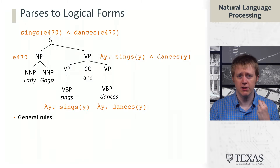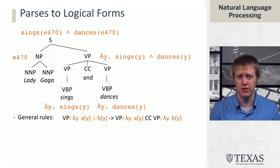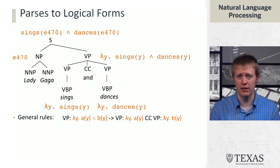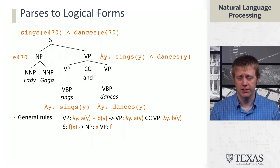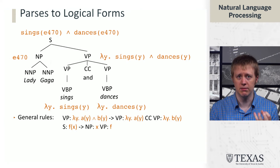This shows that there are general rules we can use here — it's not all just specific mappings of verbs to predicates. For example, we have the constituency rule VP → VP CC VP: coordinating two verb phrases. In orange we see the lambda calculus representation — we're taking lambda y. a(y) and lambda y. b(y) and ramming those together. Similarly, when we form a sentence from a noun phrase and a verb phrase, the verb phrase is some function, the noun phrase is an entity, and we apply that function to that entity.